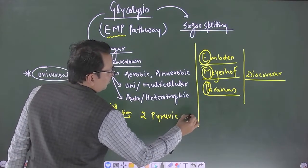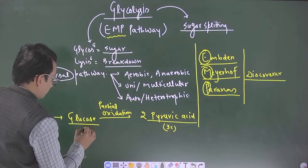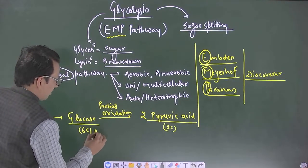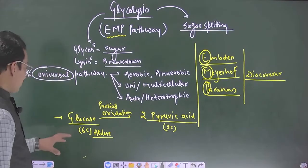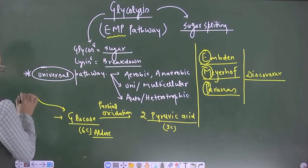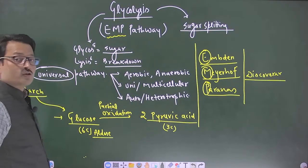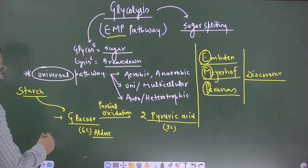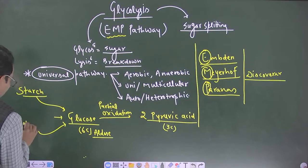Two molecules of pyruvic acid, three carbon each which breaks a six carbon aldose that is called as glucose. This glucose is obtained from breakdown of starch as in plant the stored carbohydrate is starch or it may be synthesized by photosynthesis.